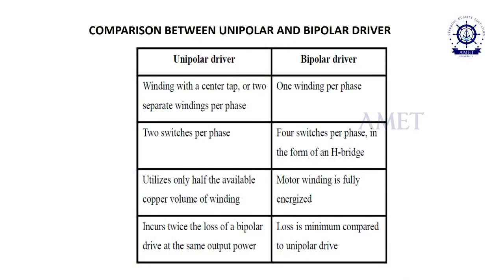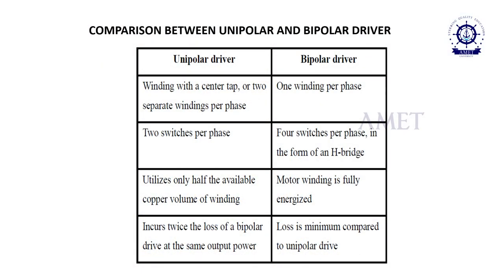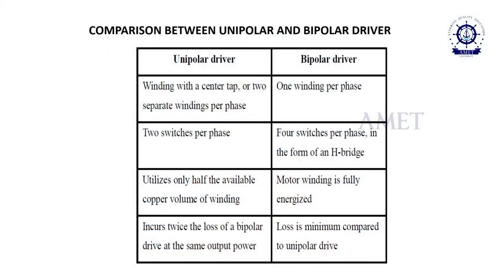A comparative study of bipolar and unipolar: construction-wise, unipolar requires a center-tap winding or two separate windings per phase, while bipolar requires one winding per phase. Unipolar needs two switches per phase and bipolar needs four switches per phase. Unipolar utilizes only half the available copper volume, while bipolar fully energizes the motor winding. Losses are higher in unipolar and lower in bipolar. We prefer the bipolar circuit because even though the cost is more, efficiency is high and speed control is very accurate.